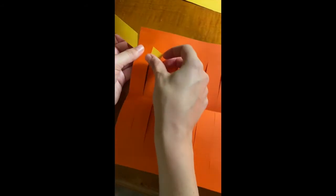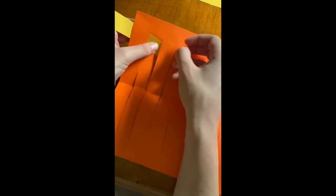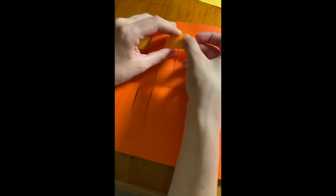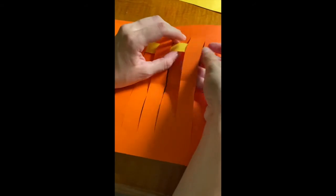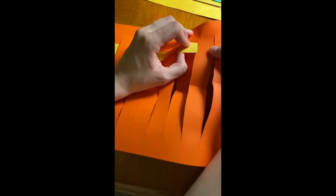Take your first paper strip and weave it across the slits in an under-over pattern. Move this strip to the top of the loom. These paper strips will be your weft threads.